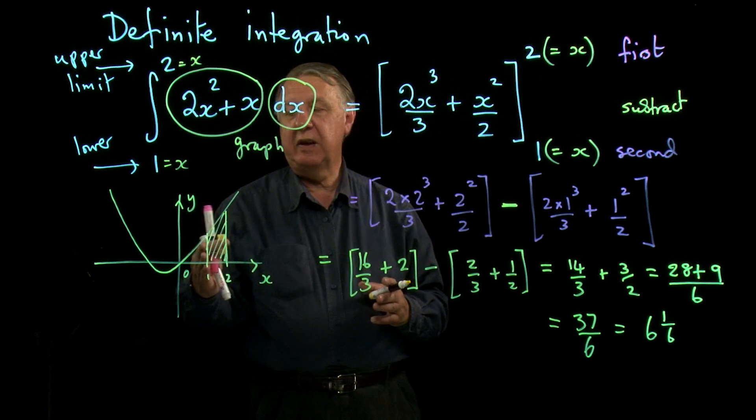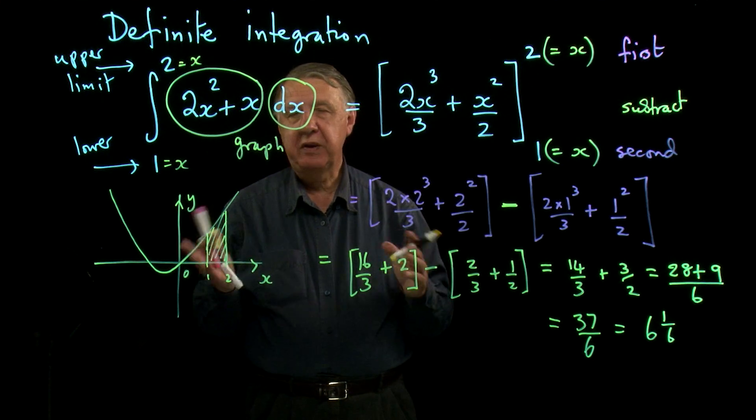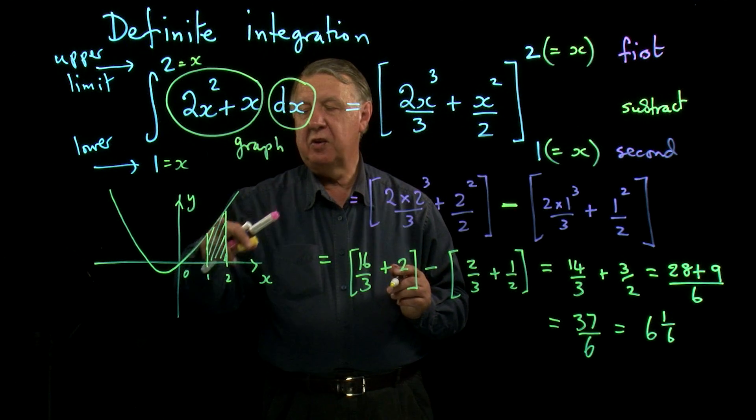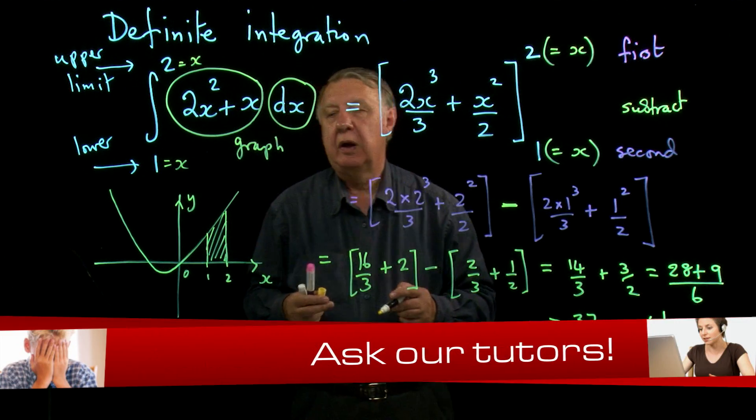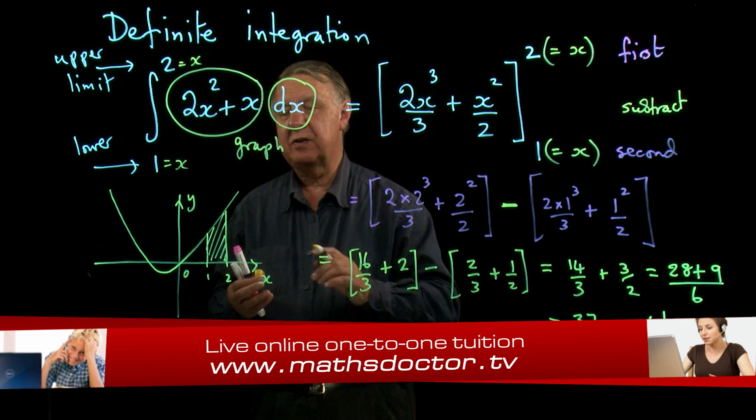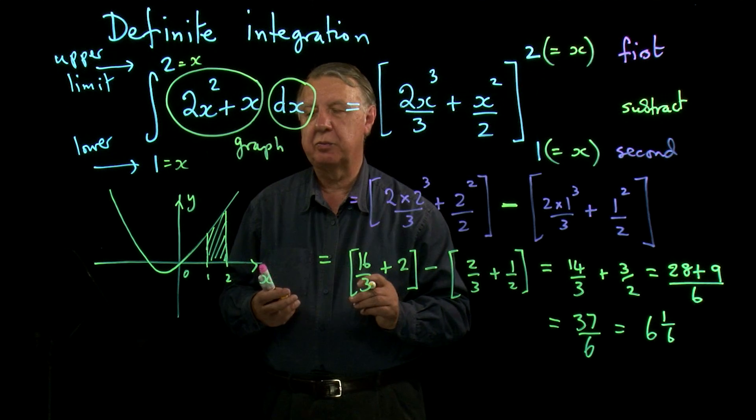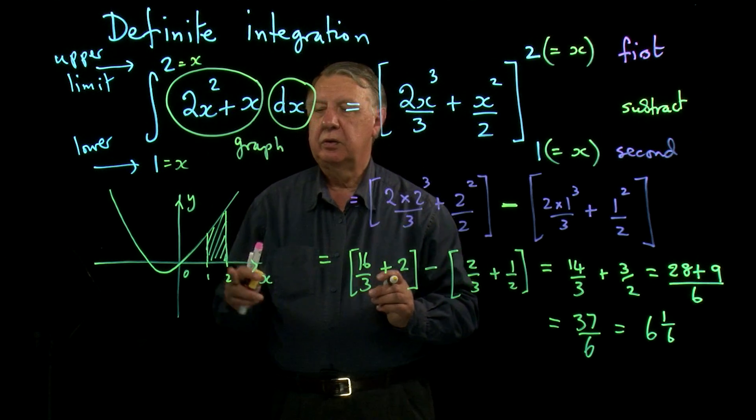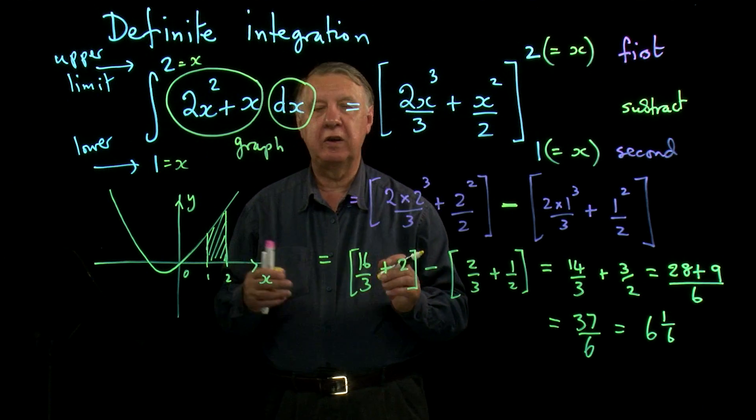So a definite integral gives us the area underneath a graph between my two limits. So another way of explaining lower and upper is the beginning of the area and the end of the area. Now when this method was first discovered, this is pretty incredible because this is not a straight line, this top edge - it's a curve, it's a parabola. And so for the first time people had a systematic way of finding the area of shapes that had curved sides rather than straight sides. And apart from the circle that they'd sort of mastered by then, this was a tremendous breakthrough.